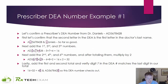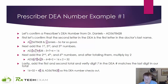Let's confirm a prescriber's DEA number. Here we have Dr. Daniels: AD5678428. The second letter D matches the first initial of his last name — so far so good. Next, we add the first, third, and fifth numbers: 5, 7, and 4, which gives us 16. Now we add the second, fourth, and sixth numbers: 6, 8, and 2, totaling 16, then multiply by 2 to get 32. Adding 16 and 32 gives us 48. The last digit in 48 is 8, and the last digit in our DEA number is 8 — it matches.